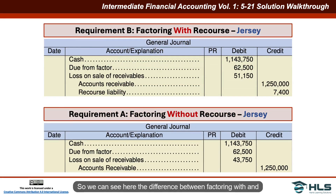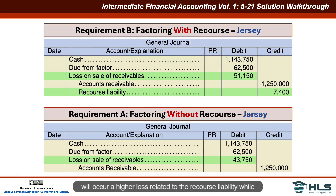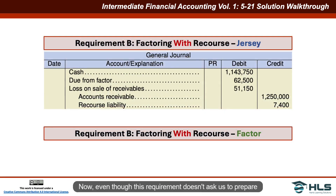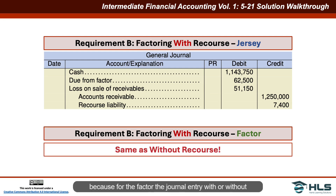The key difference between factoring with and without recourse is that the company selling the receivables incurs a higher loss due to the recourse liability, while also recording that additional liability. Even though requirement B doesn't ask for the factor's journal entries, they would be the same whether the transaction is with or without recourse. And that's it — we've solved this problem.